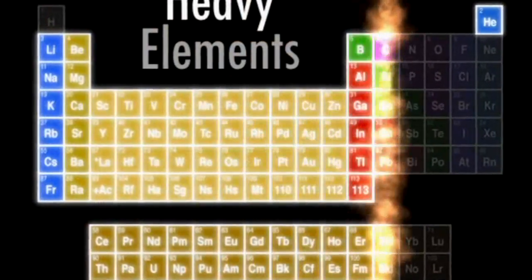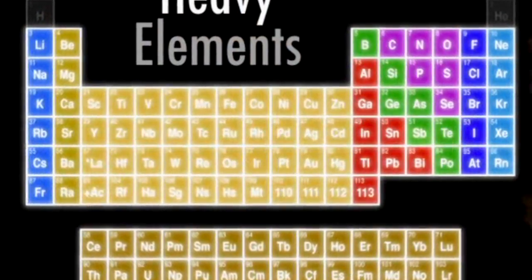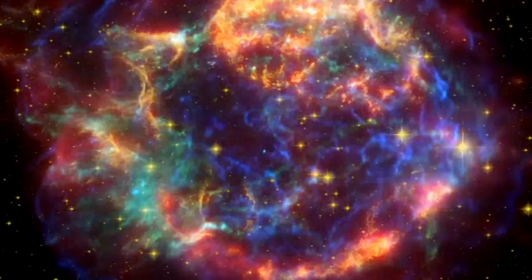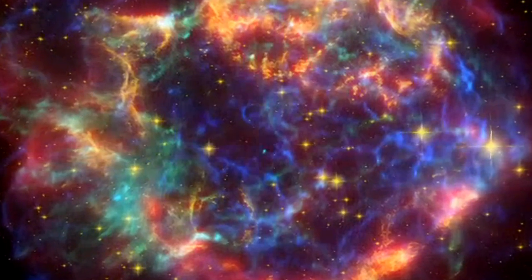Most of the heavy elements that make up planets and even people are forged in the nuclear furnaces of such explosions. Here we see heavy elements in the Cassiopeia A supernova remnant blowing back into the galaxy and mingling with interstellar gases.